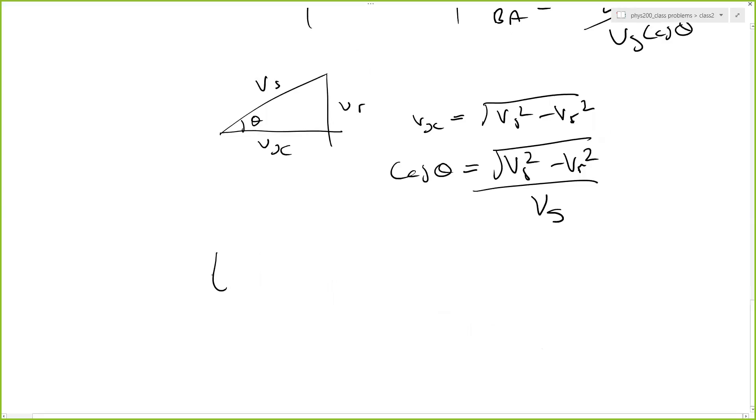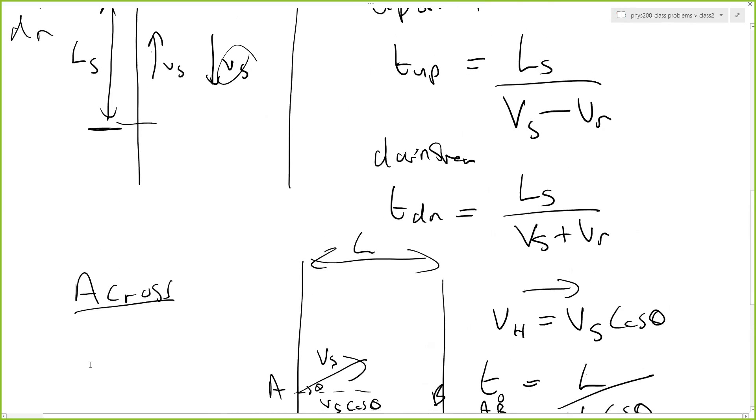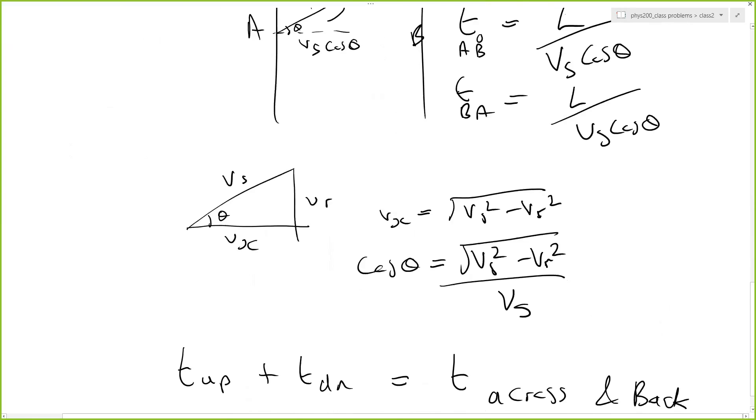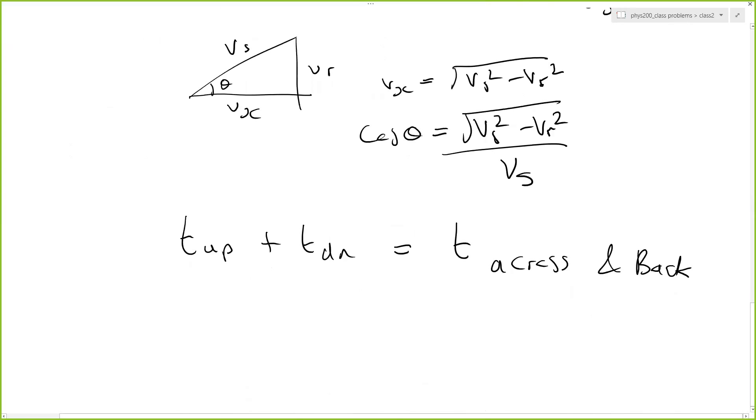So the time up plus the time back down is equal to the time across and back. And we need to find out what that distance that they need to travel is for that to be consistent. So now it's just algebra.